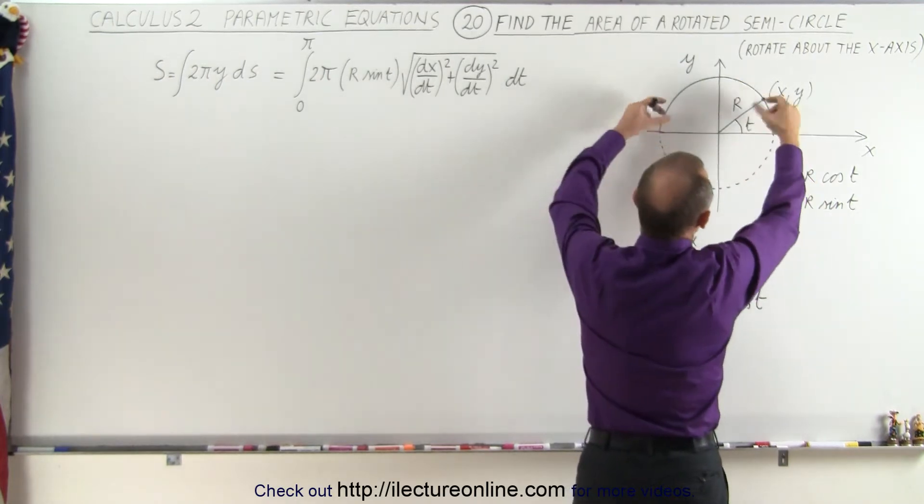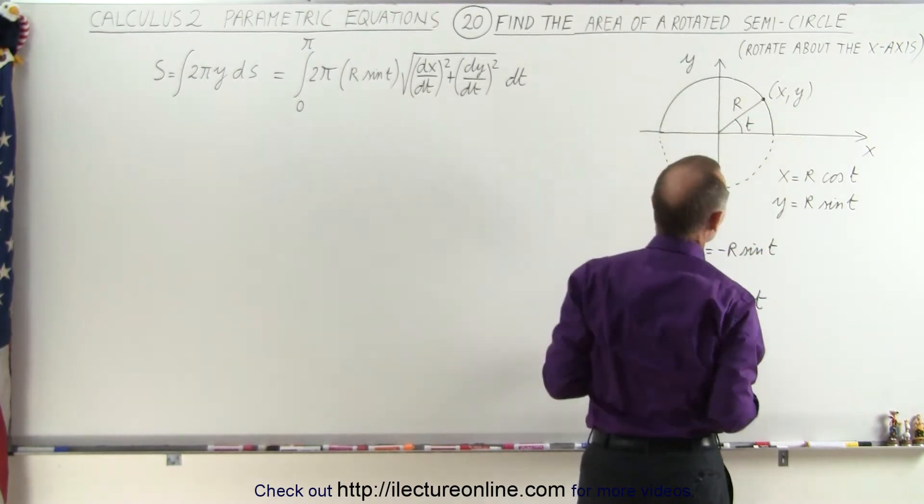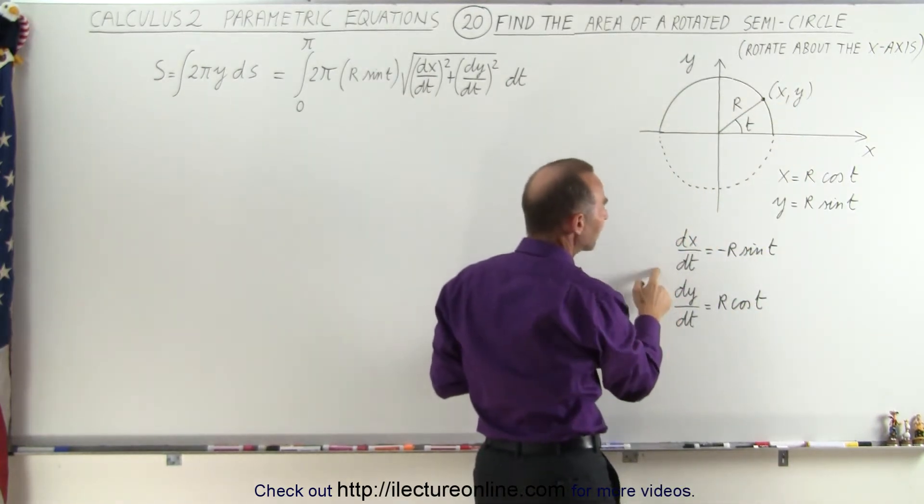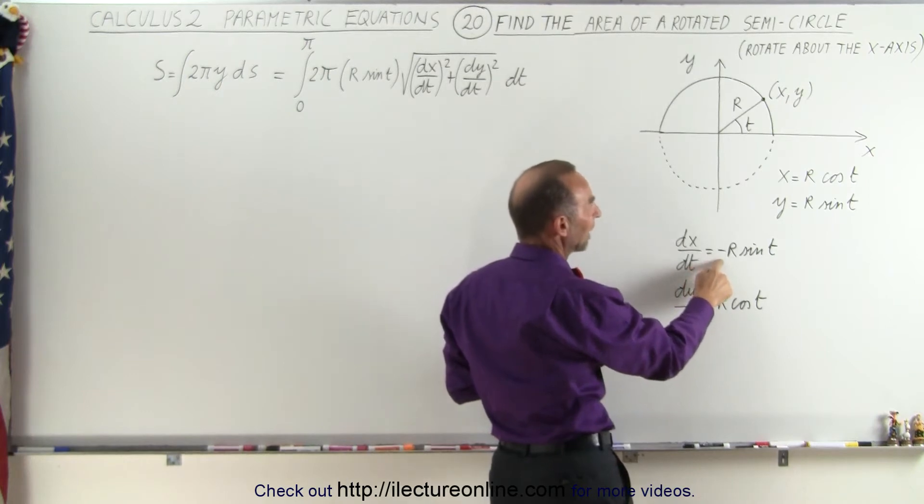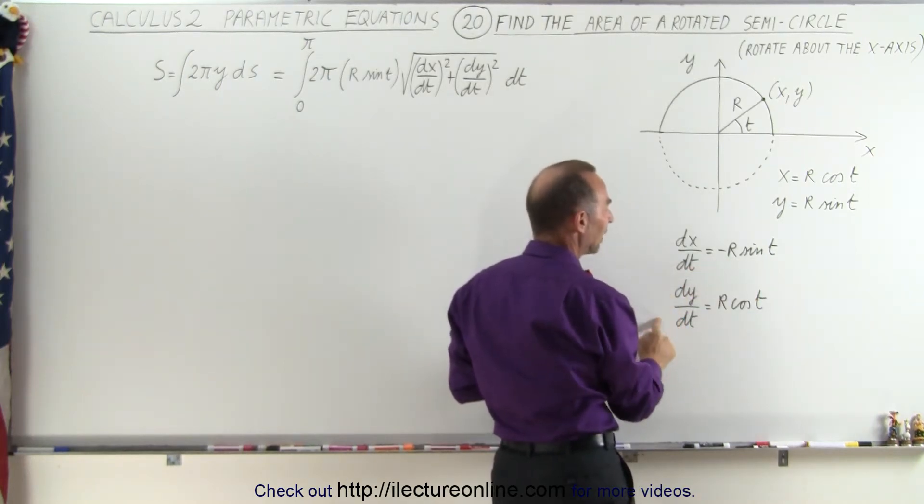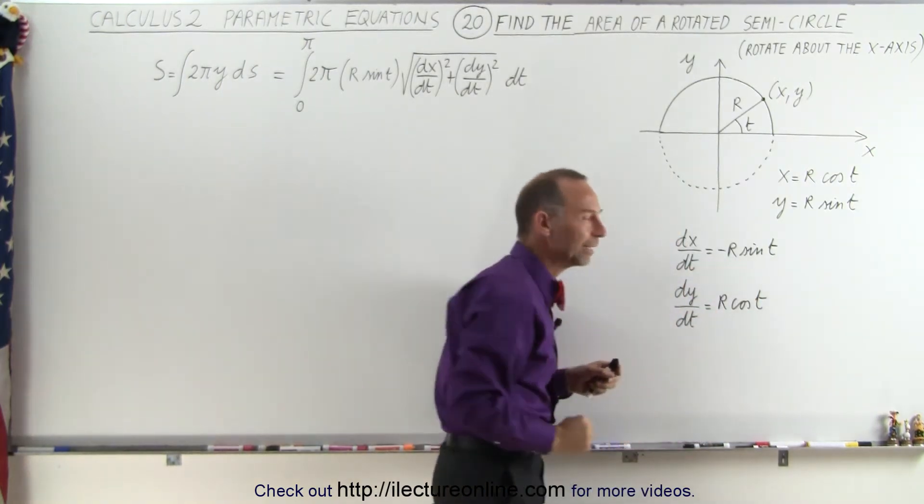Now we're going to take half the circle, rotate about the x-axis. To do that we're going to need dx/dt and dy/dt. So dx/dt is minus r sine theta and dy/dt is r cosine theta.